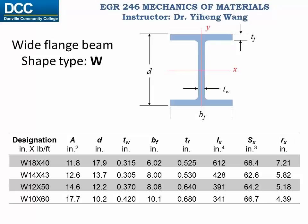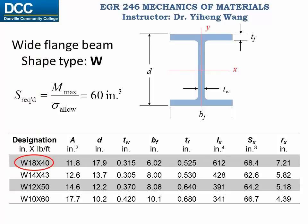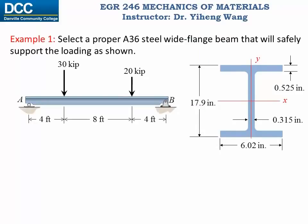We determined that in our design we need a beam with a section modulus of 60 cubic inches. For the four shapes listed here, they all have a section modulus close to 60 cubic inches, and you want to choose one that is higher than required. These four shapes all satisfy the safety requirement, so we consider cost efficiency. We choose the best one because it has the lowest nominal weight, making it the lightest and very likely the cheapest — the W18×40 beam, which meets the section modulus requirement and has the lowest nominal weight.